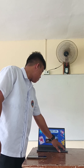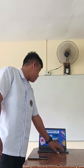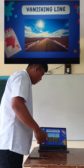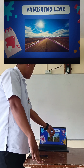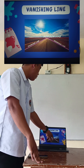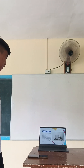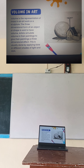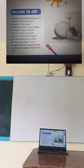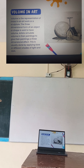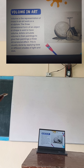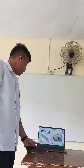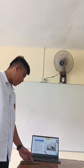Next is volume in art. Volume is the representation of mass in artwork or a sculpture. The three-dimensional form of an object or shape is said to have volume. Artists simulate volume in their paintings to give their paintings a three-dimensional effect, usually done by applying tone or different shades of light and dark. In art, volume refers to a three-dimensional quality or mass — a condition of depth and space in a piece.